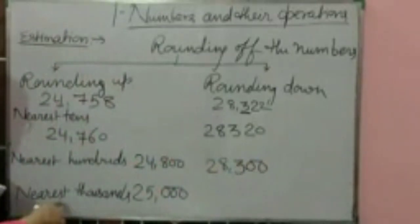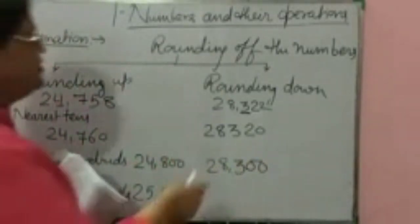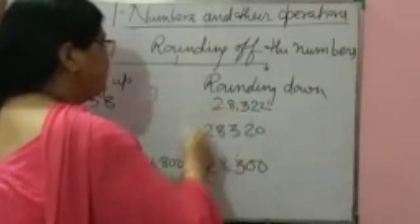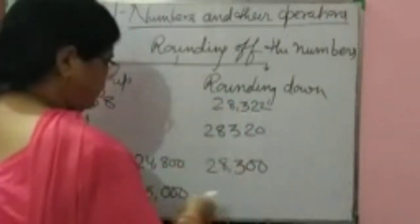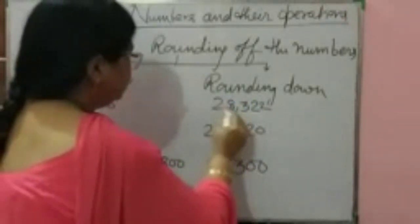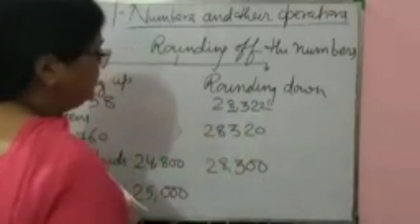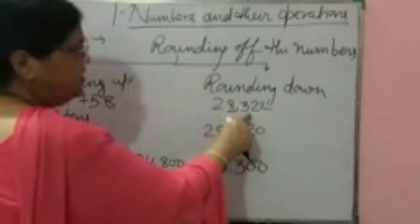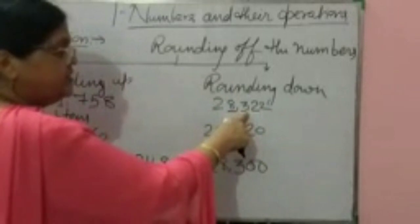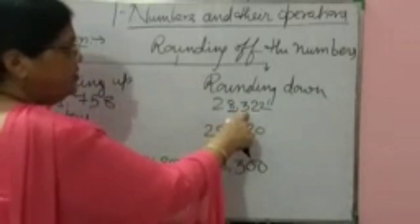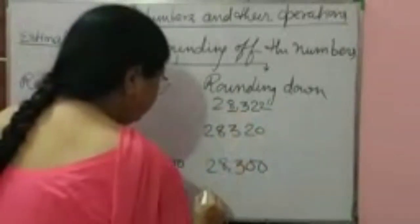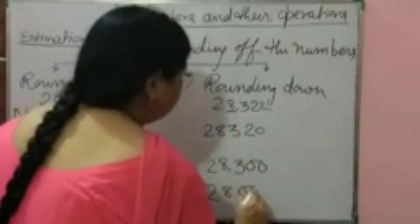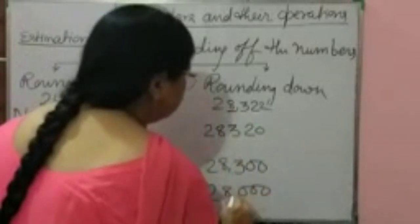Nearest thousand: underline the digit in the thousands place. 8 is in the thousands place. Just after 8, to the right side, is 3. Since 3 is less than 5, 8 will not change. The new number is 28,000.